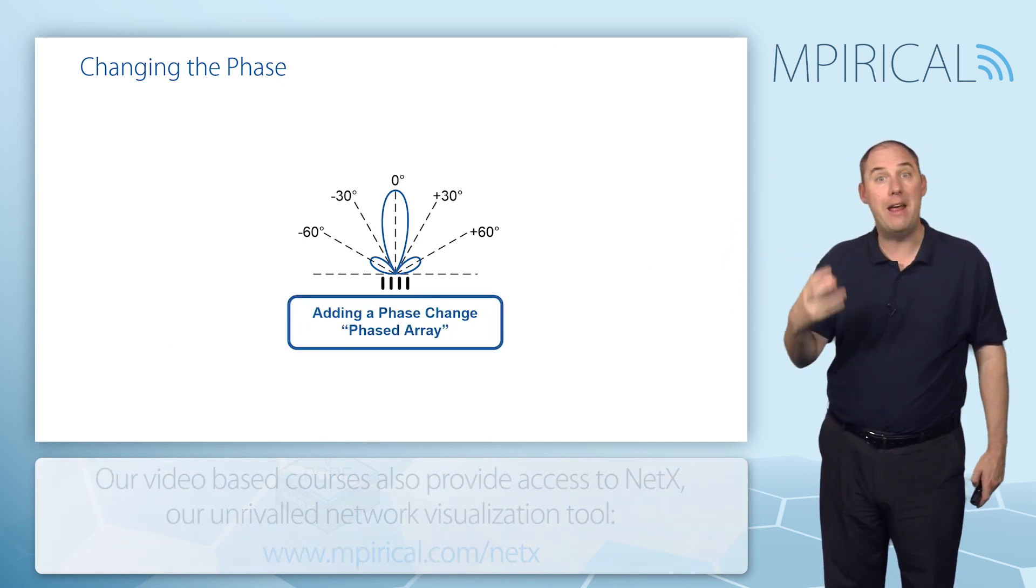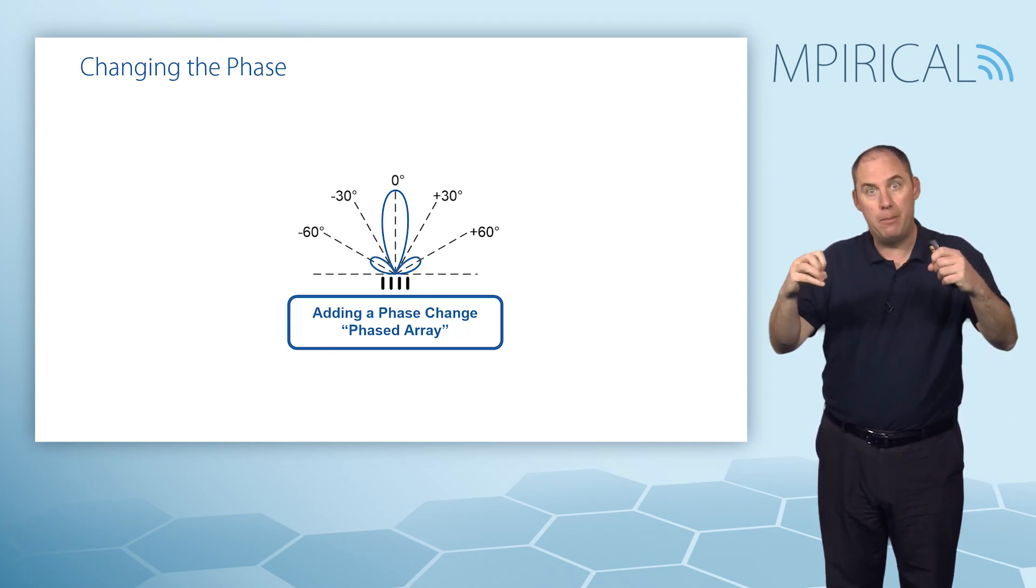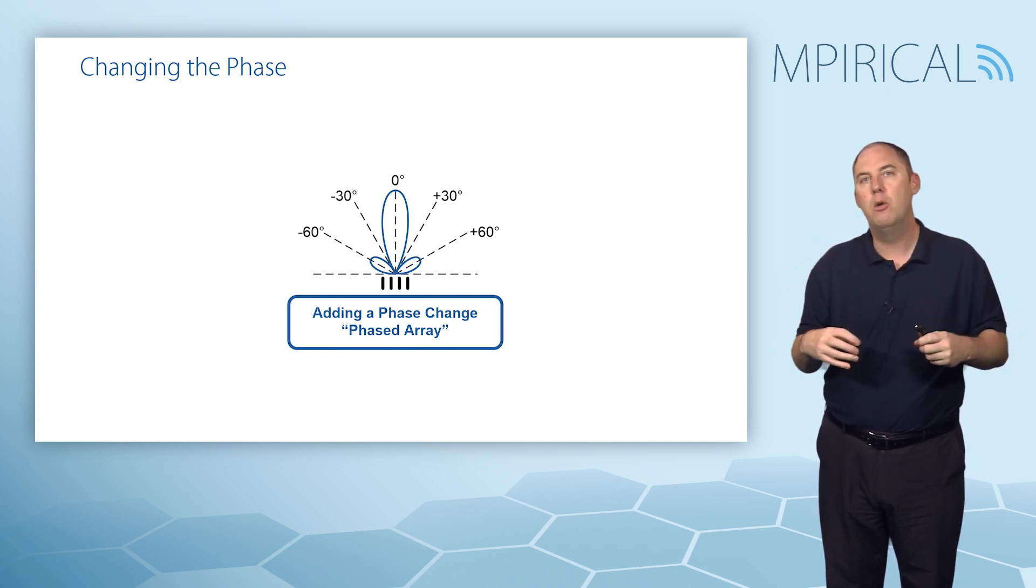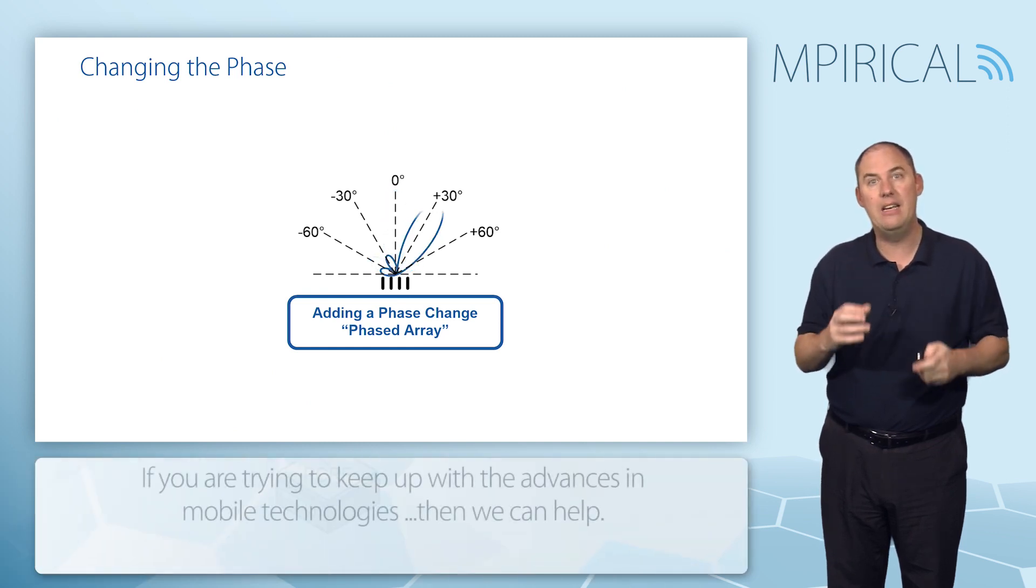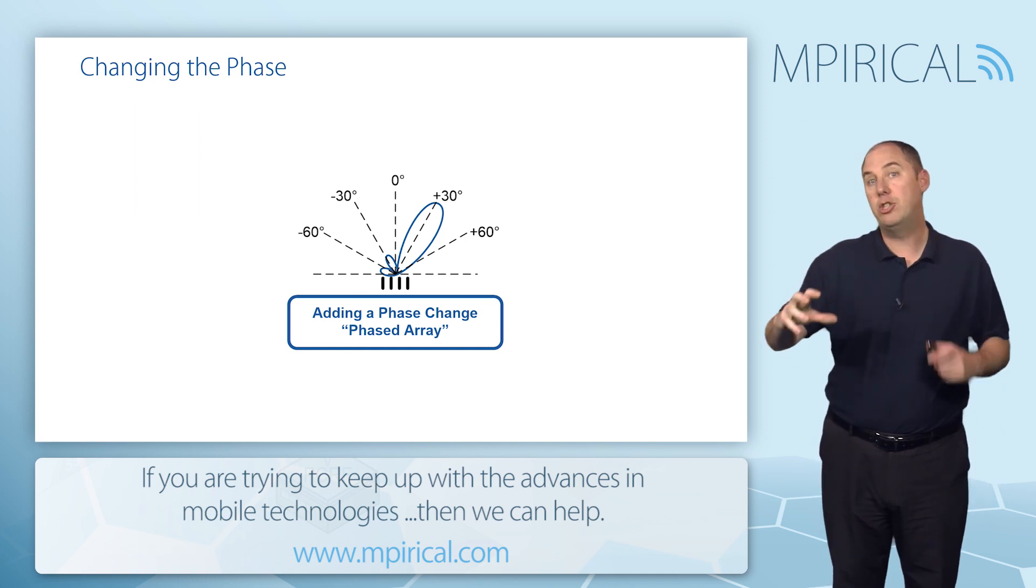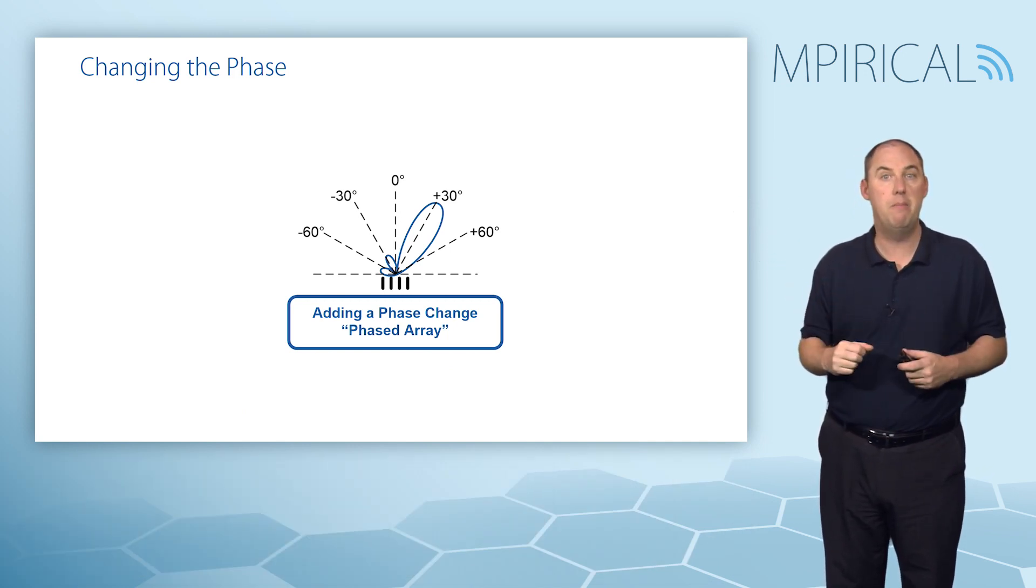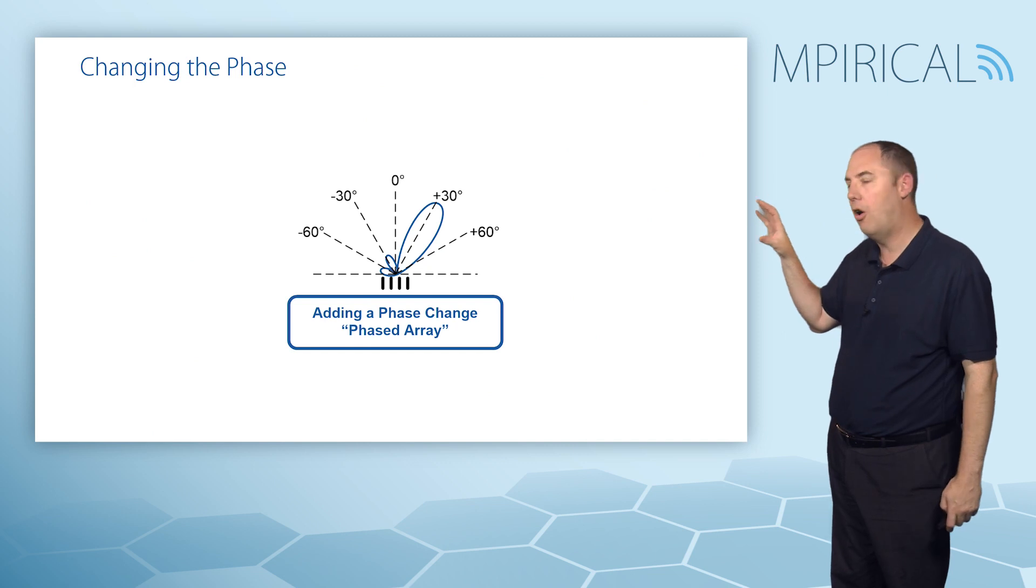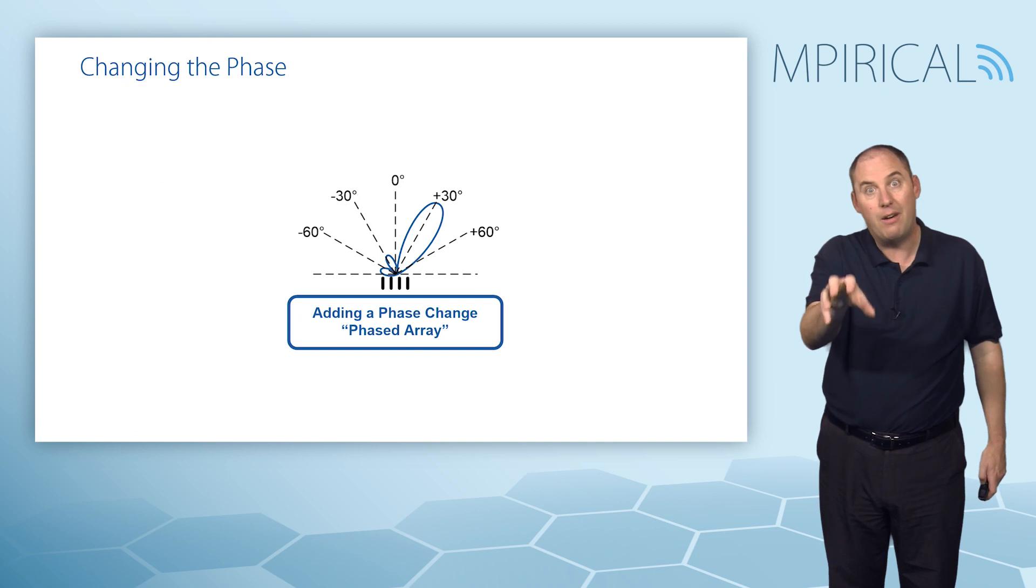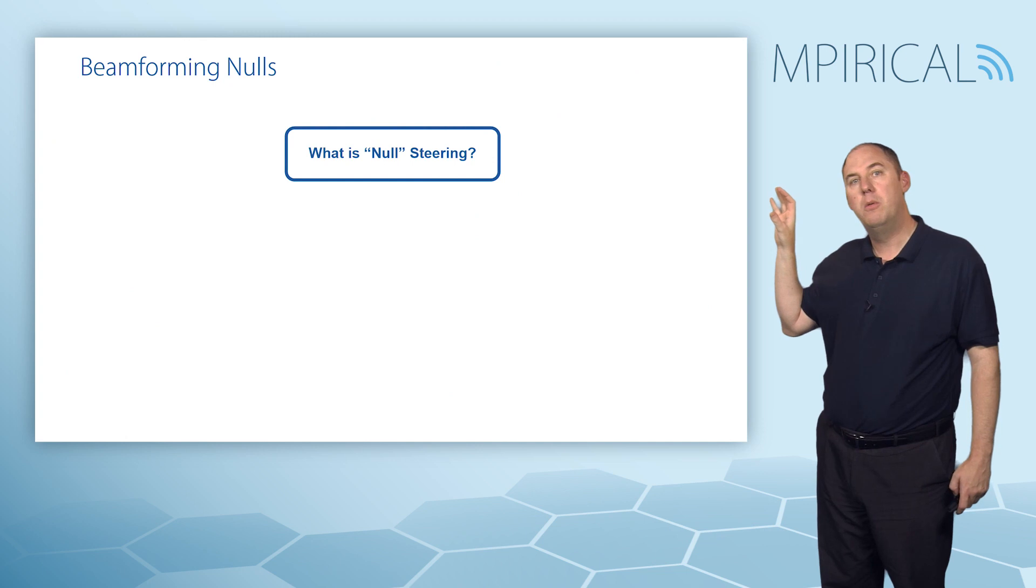By adding a phase change—and hence the term phased array—what we can do is effectively steer. We can drop those two pebbles into the pond with a slight time difference, which will make the signal reinforce in a slightly different direction, effectively pointing it in a certain direction. By changing the phase of these antennas—for example, putting a 90 degree phase between each of these—it will have this impact. Now a key part of changing the main beam is obviously great for the person or the device you're trying to connect to.